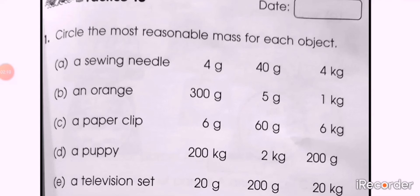Part D: a puppy. Three options are here: 200 kg, 2 kg, and 200 grams. First choose the unit. Is it in grams or kilograms? And if the puppy's mass is in kilograms, select one option from 200 kilograms or 2 kilograms.